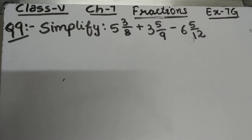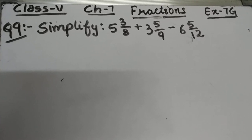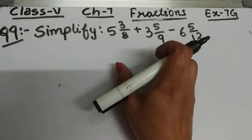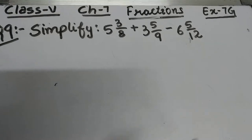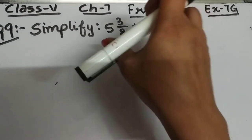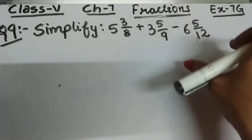Let's start question number 9 of exercise 7G. The question is: simplify 5 3/8 + 3 5/9 - 6 5/12. We have to simplify this, so first of all we'll convert these mixed fractions into improper fractions.